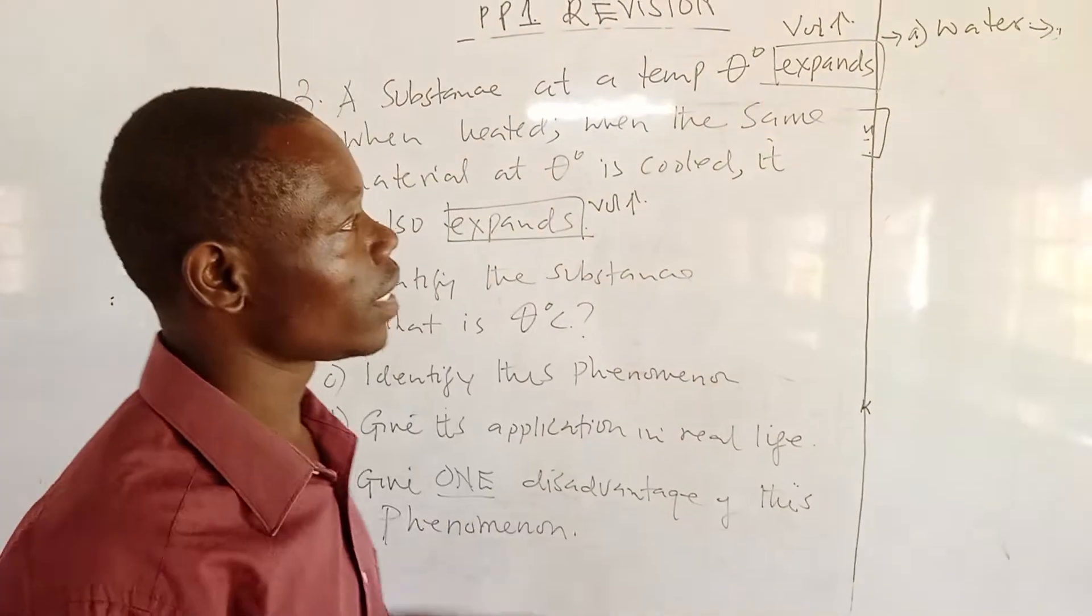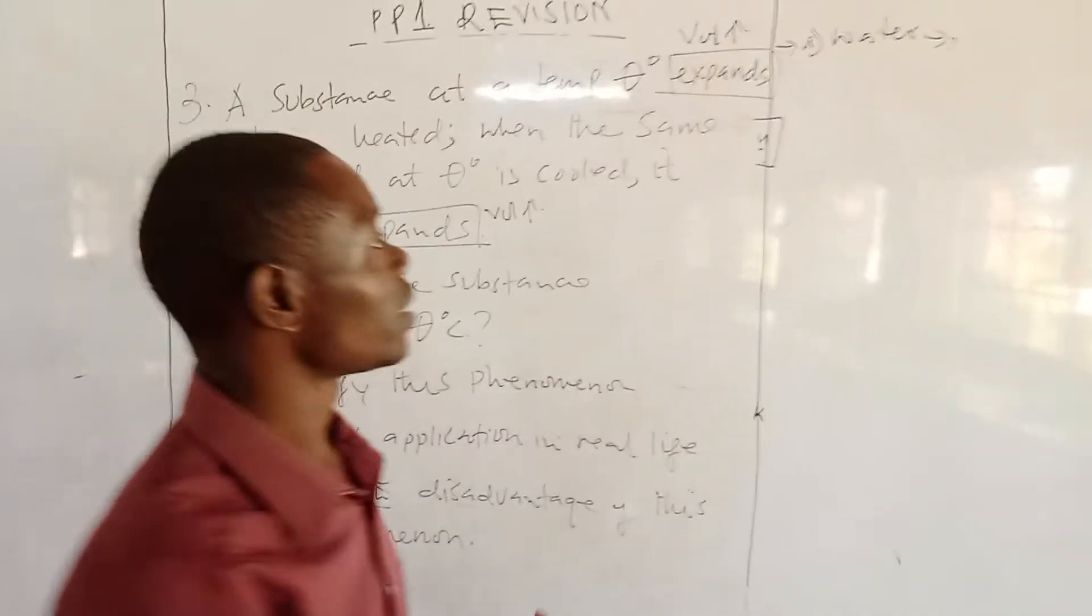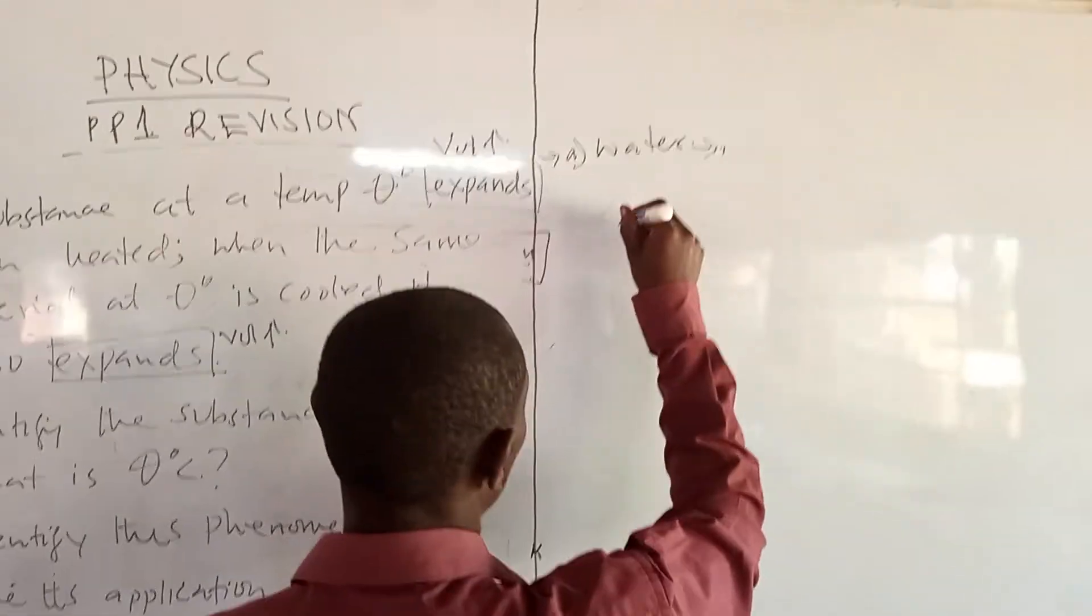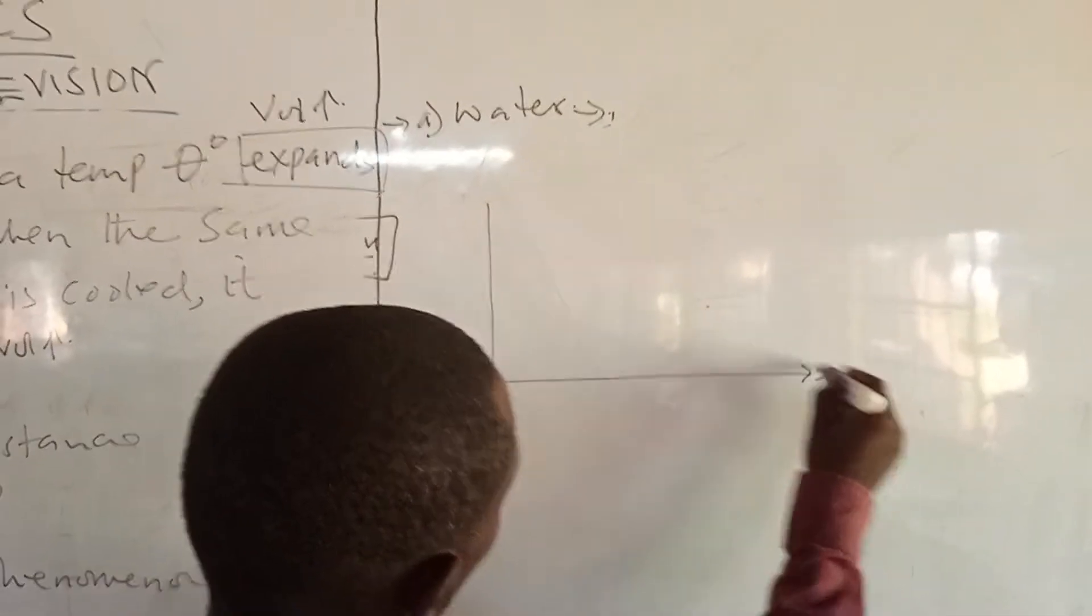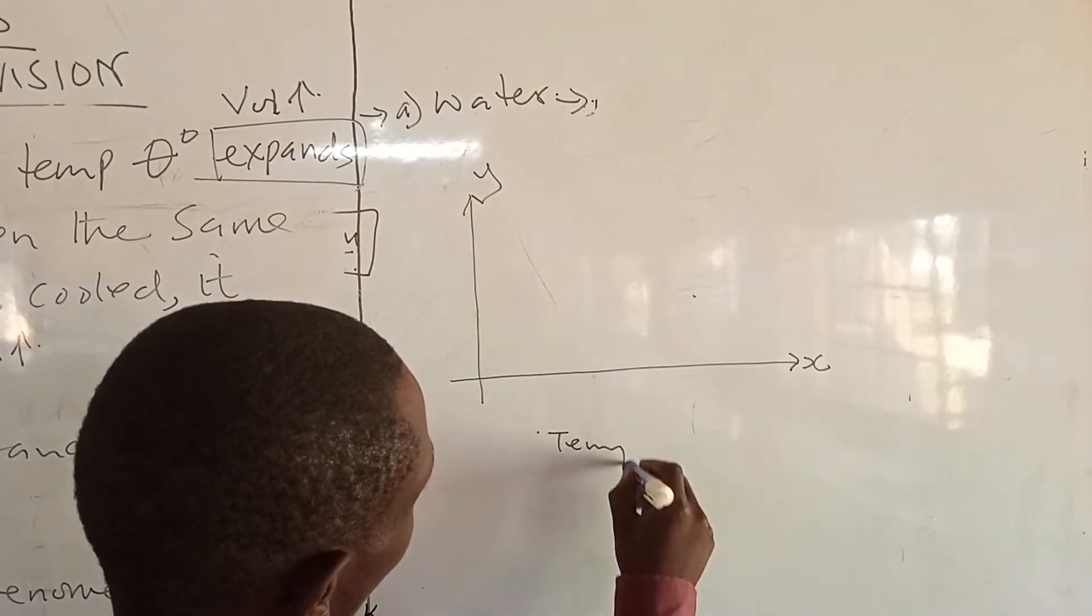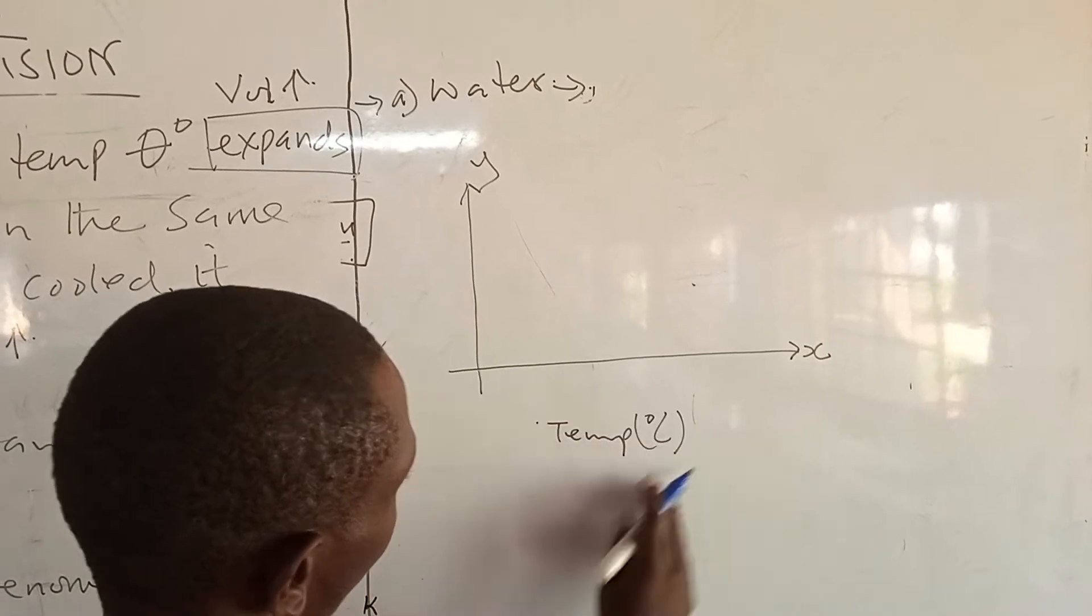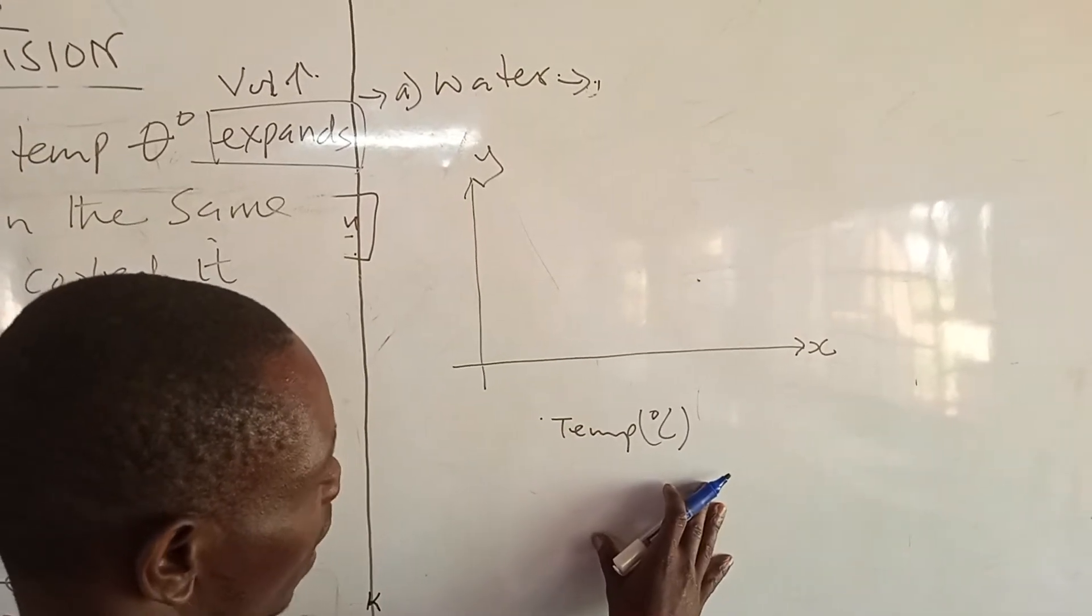If I can represent this graphically, I will draw the graph of volume of water against temperature. On my x-axis, I have temperature in degrees Celsius. Remember, in drawing any graph, you must label your axis in SI units.